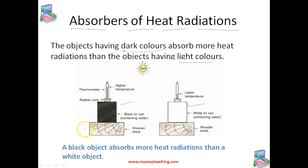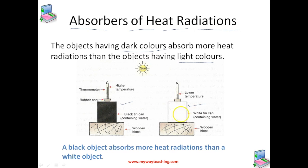Then we place both tin cans in bright sunshine for one hour. The heat radiations of the sun fall equally on both tin cans. After one hour, we note down the temperature of water in both tin cans again, and we find that the water in the black tin is at a higher temperature than the water in the white tin.